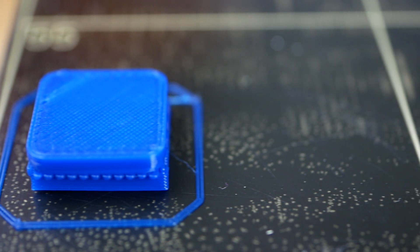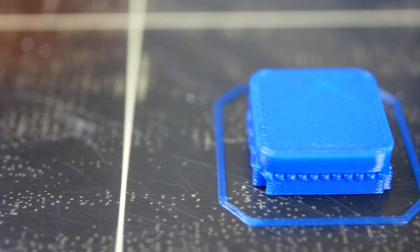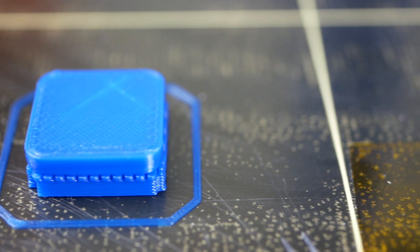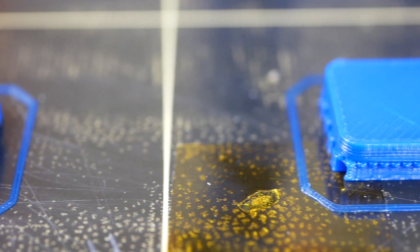My first test suggested an extrusion multiplier of around 1.0 on my Prusa, which turned out to be slightly too much, so decreasing it a little bit might be a good idea.